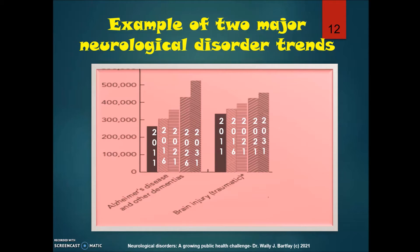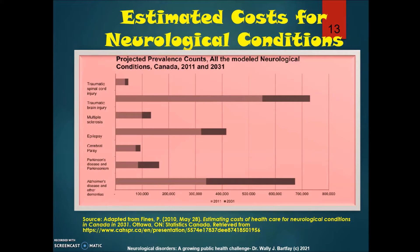Here are two major neurological disorder trends showing increases for Alzheimer's disease and other dementias from 2011 to 2031, with numbers exceeding 500,000. Traumatic brain injuries are also projected to rise from around 300,000 in 2011 to over 400,000 by 2031. Estimated care costs across conditions — including traumatic spinal cord injuries, traumatic brain injury, multiple sclerosis, epilepsy, cerebral palsy, Parkinson's disease — show Alzheimer's disease and other dementias as the second most costly condition.